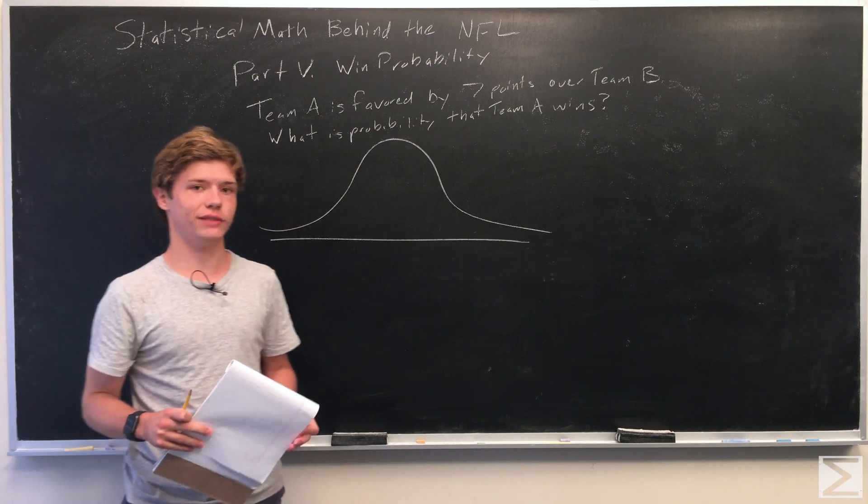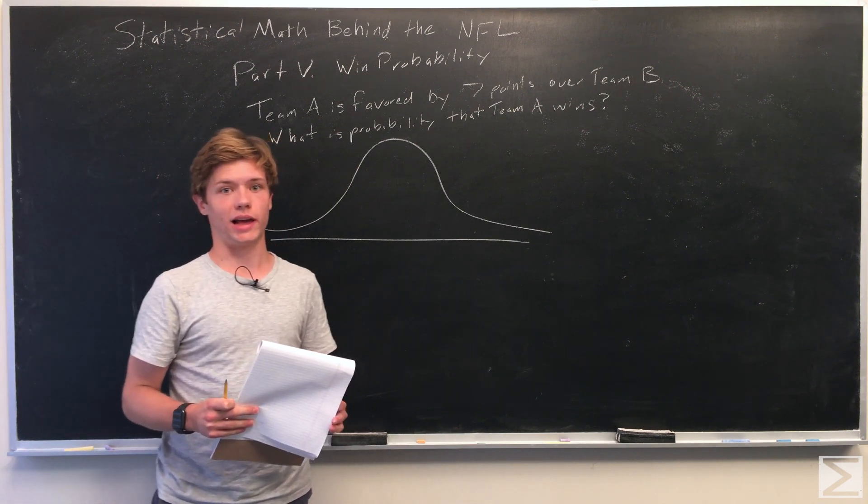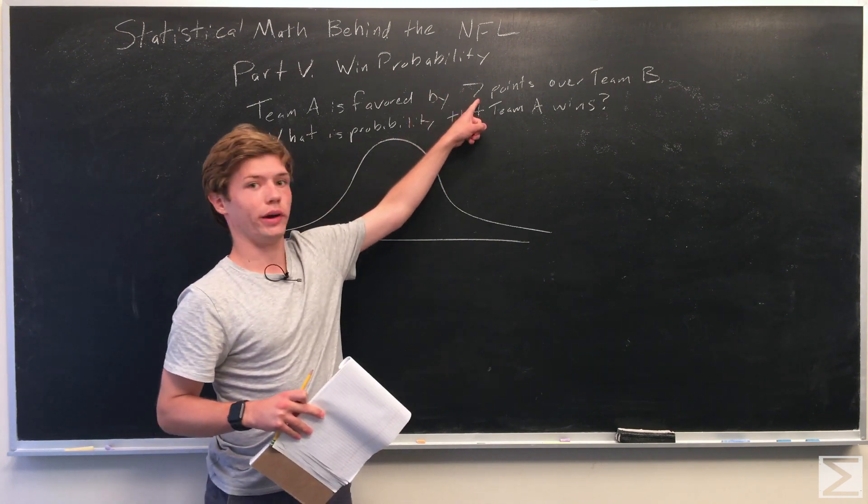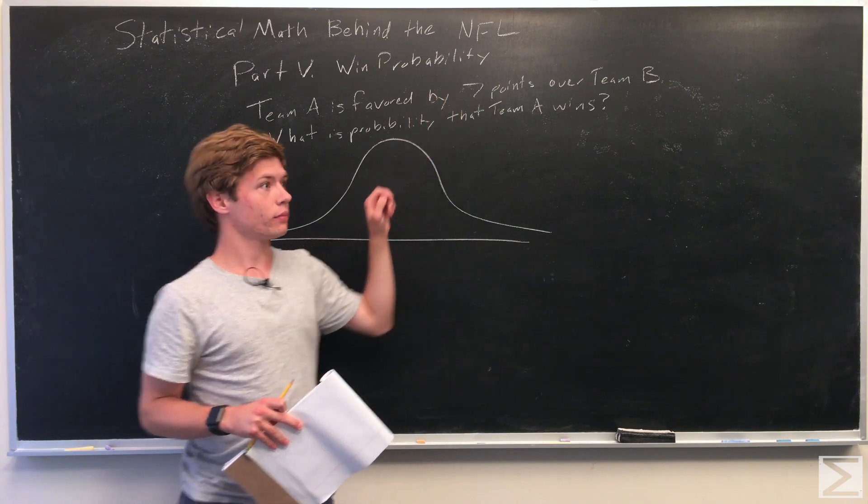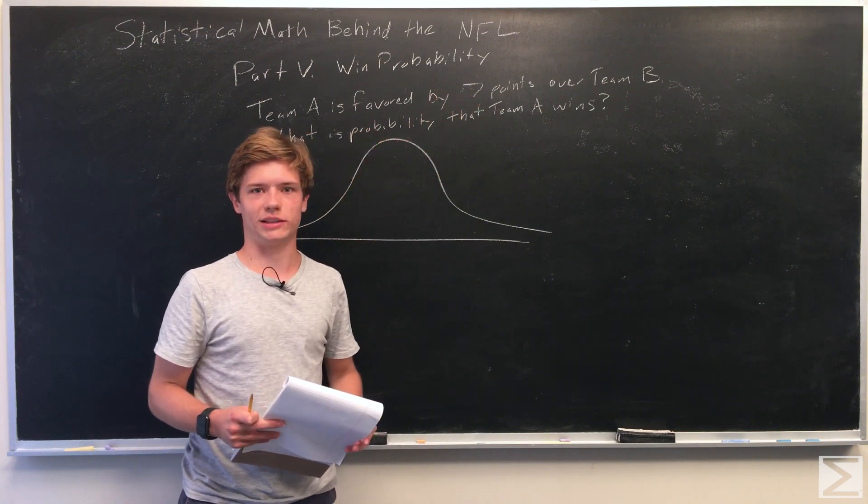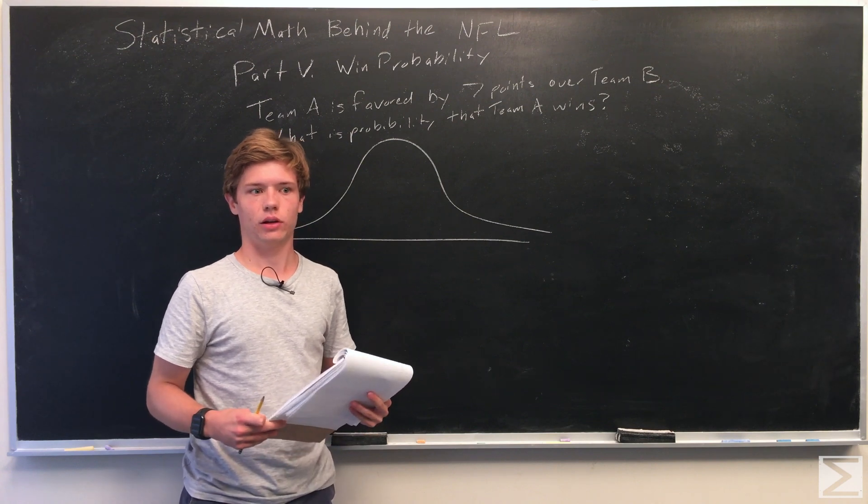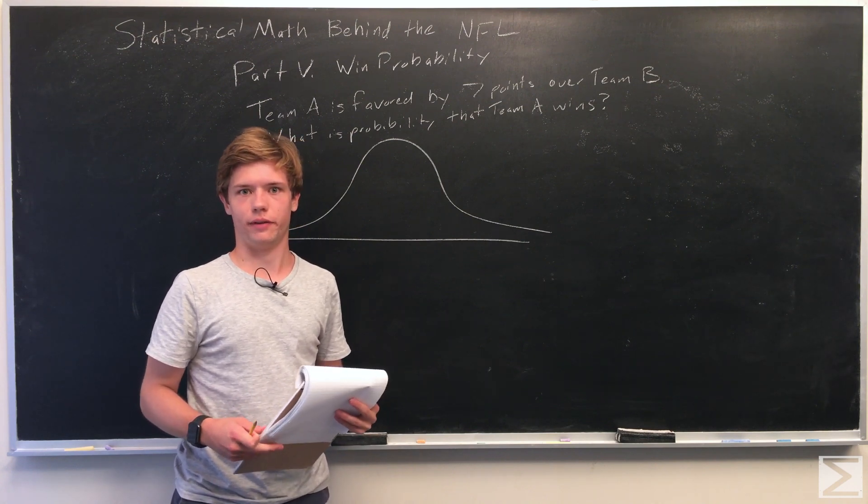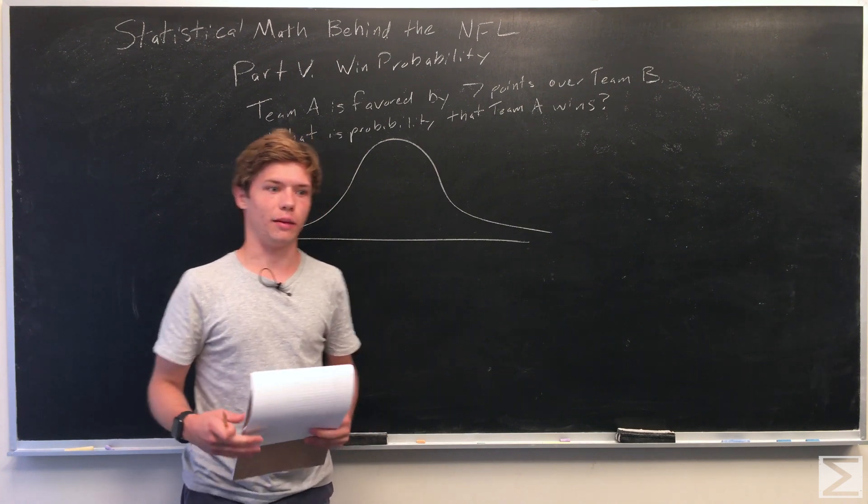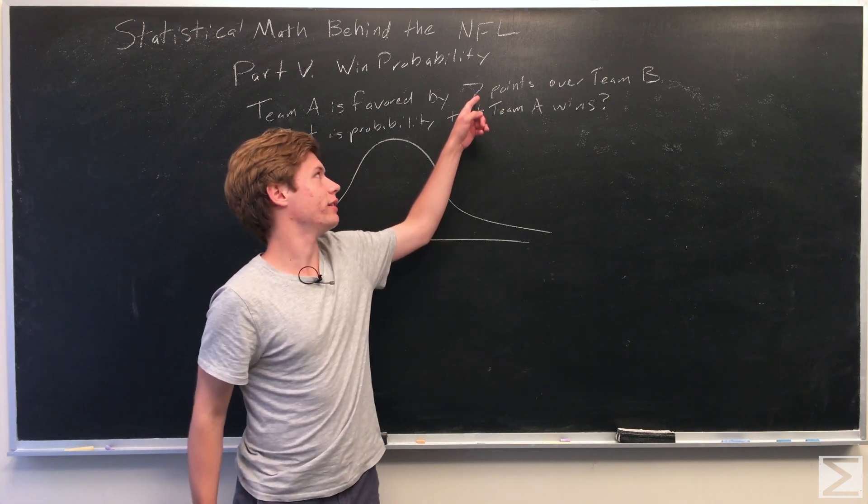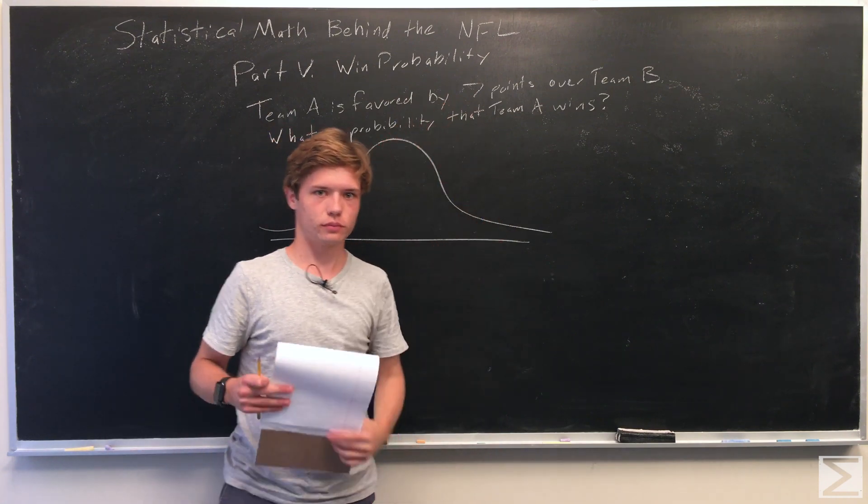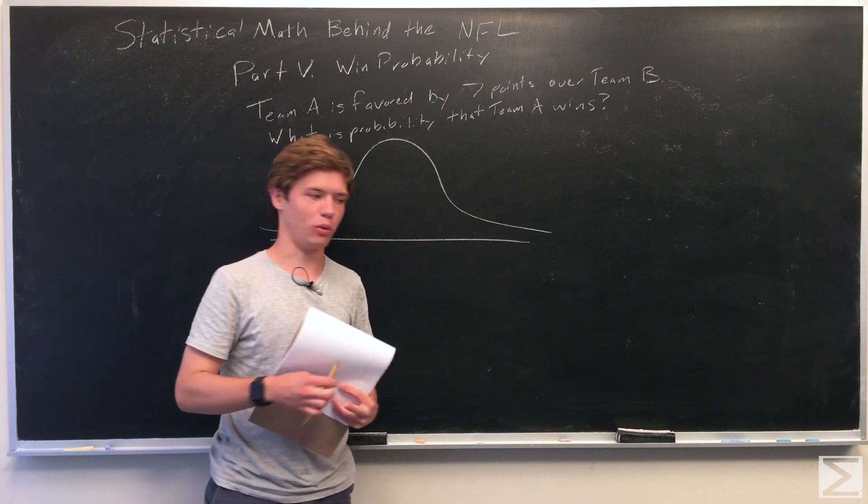So we're actually given the mean as part of this problem, and it is seven points because by some means, whether it's expert predictions or advanced stats determining which team is better, at some point it's determined the most likely event to happen is that Team A will win by seven points against Team B. So we set the mean as seven points.